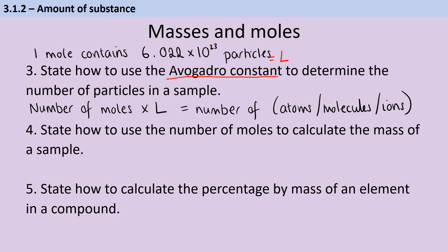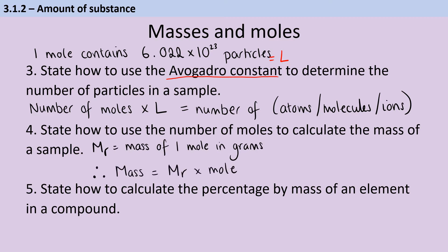In order to work out the mass of a certain substance, I need to know the relative formula mass or relative molecular mass, MR, because this is the mass of one mole in grams. So if I know the number of moles, I can multiply by the relative formula mass or relative molecular mass to work out what the mass of the substance will be.